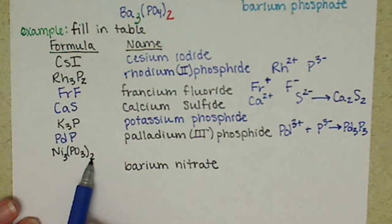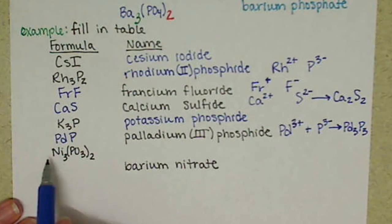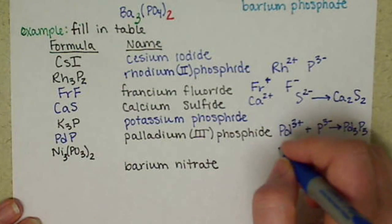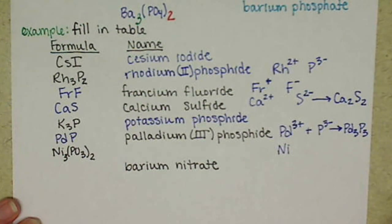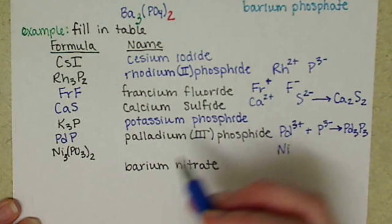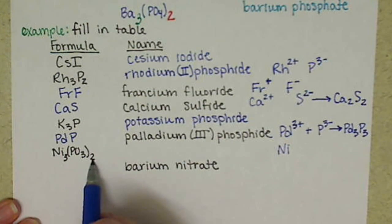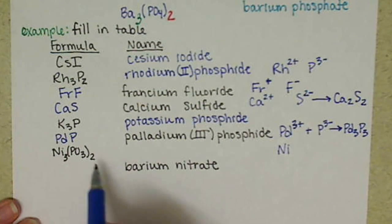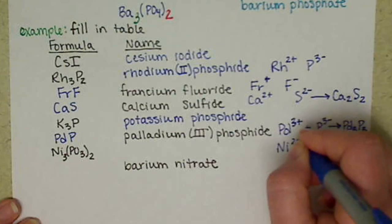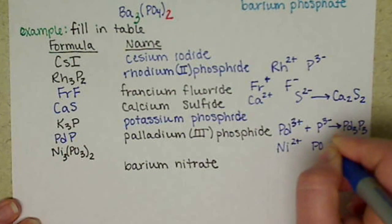Ni3(PO3)2 - nickel is a transition metal, so we have to figure out its charge first, so we do a cross-charge. The 2 goes to the nickel, the 3 to the PO3, which is phosphide. So we have nickel(II) phosphide.